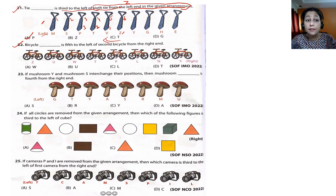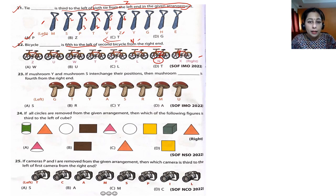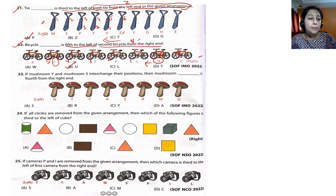Question 22: bicycle dash is fifth to the left of the second bicycle from the right end. Second bicycle from the right: one, two — that's N. Fifth to the left of N: one, two, three, four, five — the answer is U. Option B is correct for question 22.